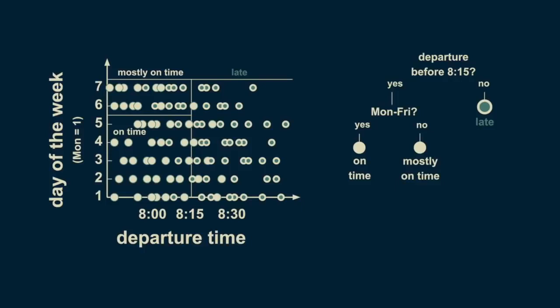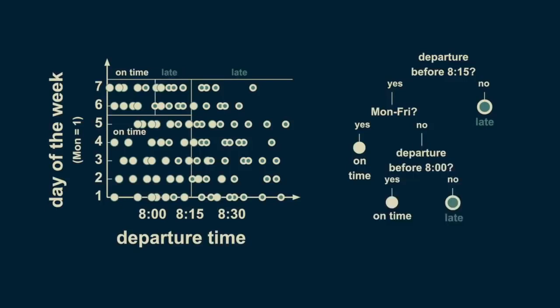Now, we can further refine our estimate by subdividing our weekend, pre-8:15 departure times into before and after 8 o'clock. Before 8 o'clock, almost all of the arrivals are on time, and between 8 and 8:15, the majority of them are late. Now we have our two-dimensional decision tree neatly divided into four regions. Two of them reflect on-time arrivals, and two of them show late arrivals. This is a three-level decision tree. Note that not all the branches need to extend down to the same number of levels.